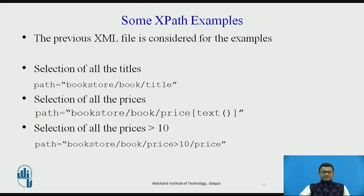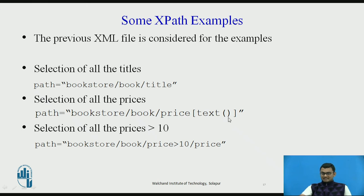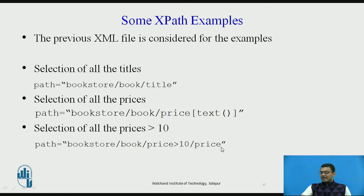These are some XPath examples. If you want to select all the titles, write bookstore/book/title. If you want to select all the prices, write bookstore/book/price. If you want to select all the prices above the value 10, write /bookstore/book[price > 10]/price — this returns the list of elements having a price greater than 10.